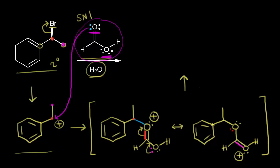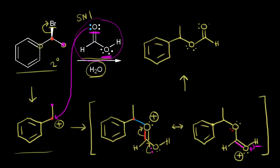To get to our product, a base like water comes along and takes this proton, leaving these electrons behind on the oxygen. Our final product has a benzene ring, an oxygen, a carbonyl, and a hydrogen. Notice the product has a chiral center, so we expect a racemic mixture — both enantiomers. Because going back to our carbocation, this carbocation is planar, and our nucleophile can attack from either side.